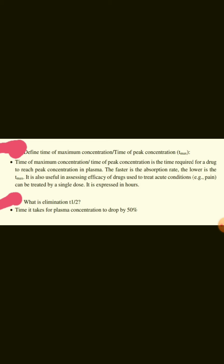Define time of maximum concentration or time of peak concentration, i.e., Tmax. Time of maximum concentration is the time required for a drug to reach peak concentration in plasma. The faster the absorption rate, the lower the Tmax. It is also useful in assessing efficacy of drugs used to treat acute conditions; for example, pain can be treated by a single dose. It is expressed in hours.